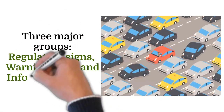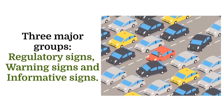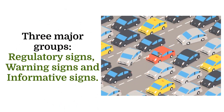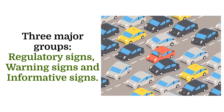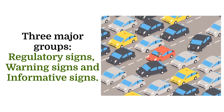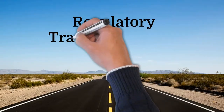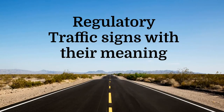The traffic signs in India are categorized into three major groups, which are regulatory signs, warning signs and informative signs. Presenting regulatory traffic signs with their meaning — these signs require the driver to obey the signs for the safety of other road users.